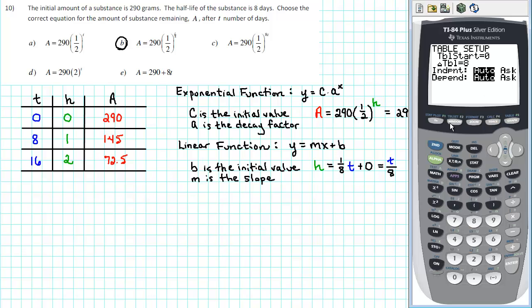Make sure that the independent and dependent variable are both on auto. Next, go to the table, which is second graph. Notice that the table that is produced matches the table that we created initially. As the X values go up by 8, the Y values are being cut in half. The half-life of the substance is 8 days and the initial amount is 290 grams.